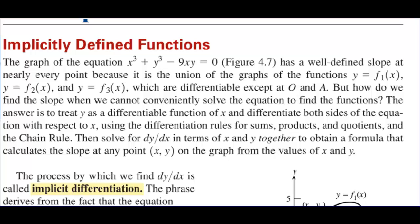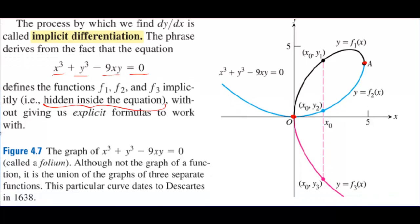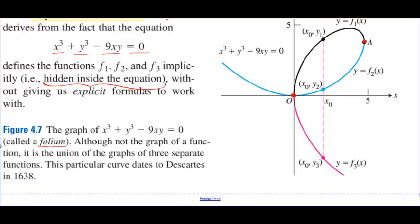Then solve for dy/dx in terms of x and y together to obtain a formula that calculates the slope at any point (x, y) on the graph. The process by which we find dy/dx is called implicit differentiation. The phrase derives from the fact that the equation x³ + y³ - 9xy = 0 defines the functions f1, f2, and f3 implicitly — there's a hidden relationship we can't express with explicit formulas. The graph of this equation is called a folium, which dates to Descartes in 1638.